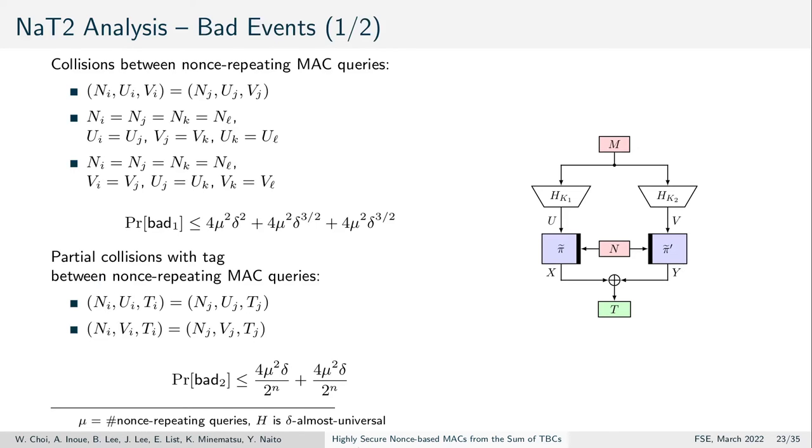We consider four sets of bad events. First, collisions between nonce-repeating MAC queries. There, for example, simultaneous collisions between both hash outputs or so-called alternating hash collisions. In sum, we arrive at the following bounds for those events, where we make use of a lemma by Nandi et al. for alternating hash collisions.